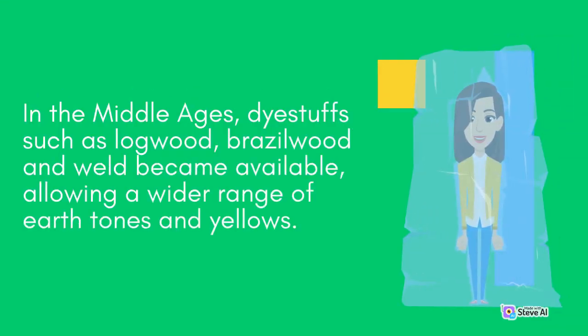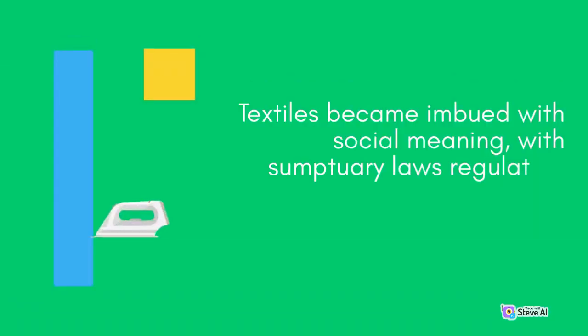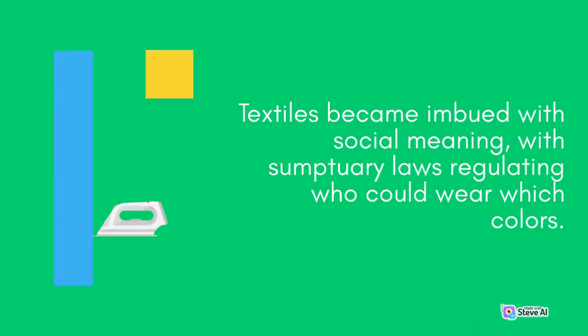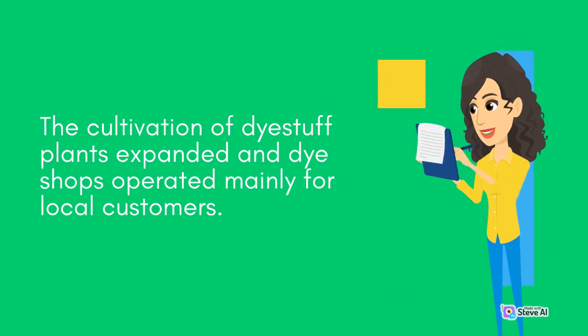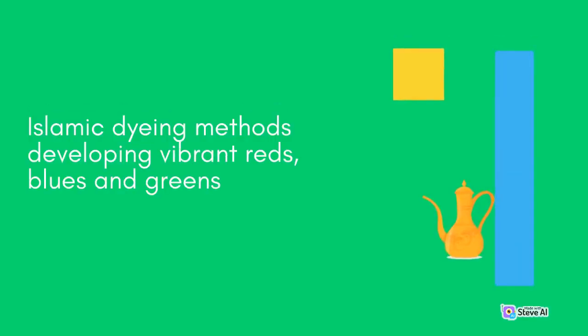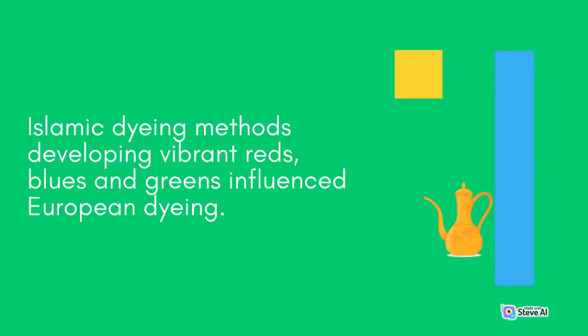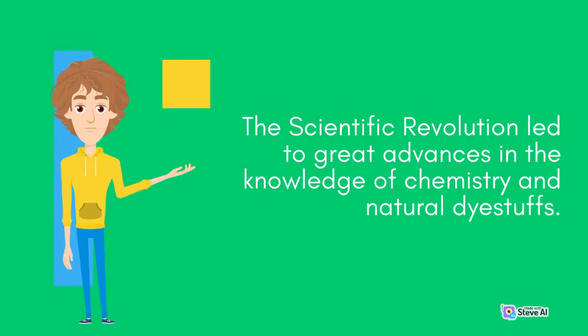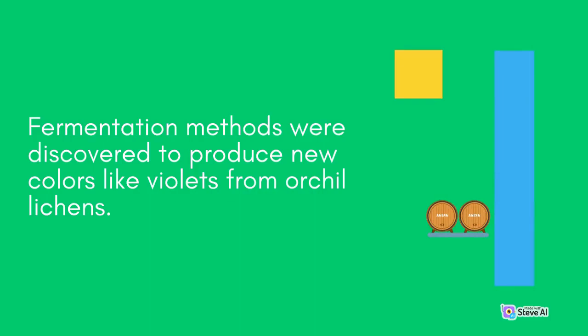In the Middle Ages, dyestuffs such as logwood, brazilwood, and weld became available, allowing a wider range of earth tones and yellows. Textiles became imbued with social meaning, with sumptuary laws regulating who could wear which colors. The cultivation of dyestuff plants expanded and dye shops operated mainly for local customers. Islamic dyeing methods developing vibrant reds, blues, and greens influenced European dyeing. The scientific revolution led to great advances in the knowledge of chemistry and natural dyestuffs, and fermentation methods were discovered to produce new colors like violets from orca lichens.